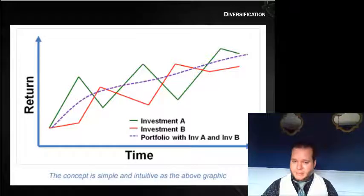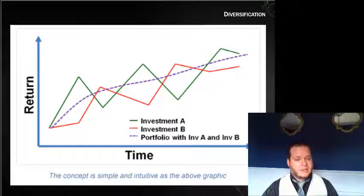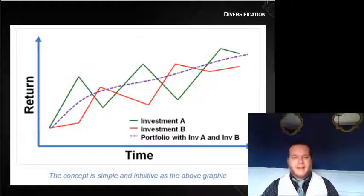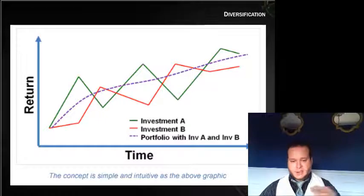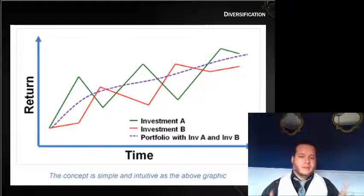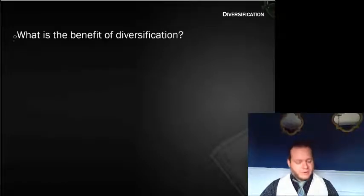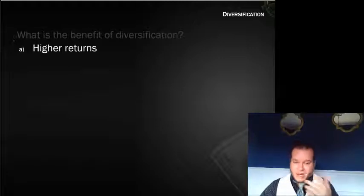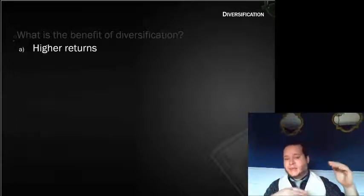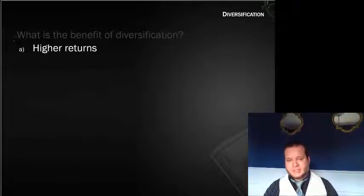What else do you notice about the purple line? It's very smooth — it doesn't bounce around nearly as much as the red or green lines. That steadiness and stability is a reduction in risk. That bouncing up and down is what risk looks like in investments. The more stable and consistent the performance, the less risk it has. So diversifying — buying some of each — reduced the risk while still giving very solid results. The benefit of diversification is not higher returns; it's the same return for less risk.